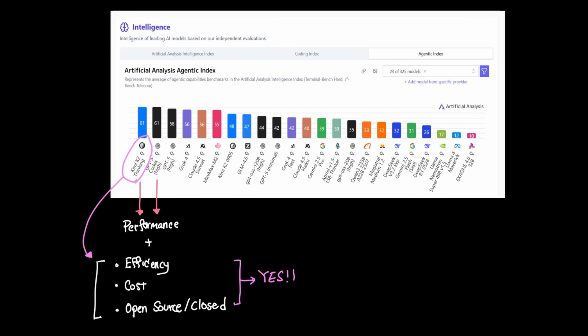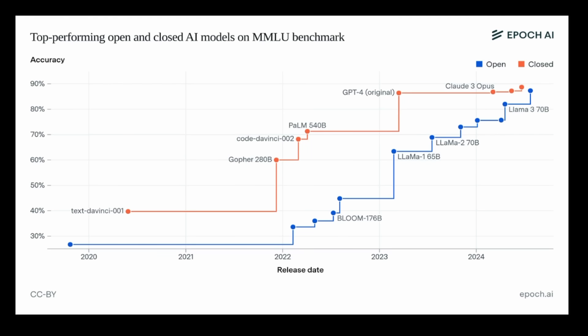Now the gravity of this is really hard to understate because for the longest time, open models have trailed behind closed proprietary models in performance by at least about 3-6 months. And frontier labs like OpenAI, Anthropic, XAI, and Gemini all have been leading with a decent margin.